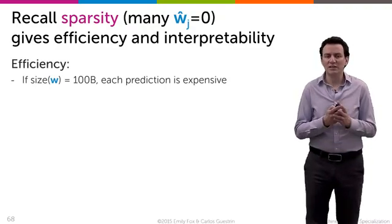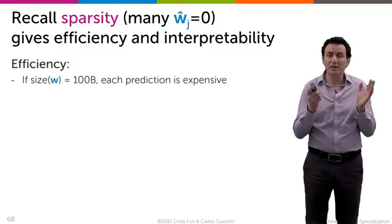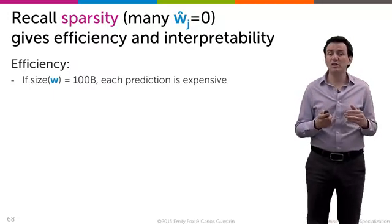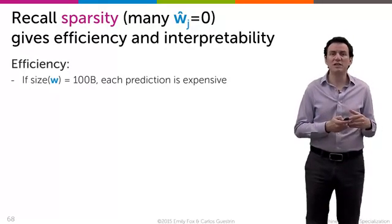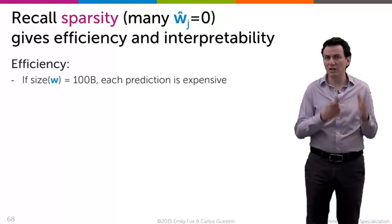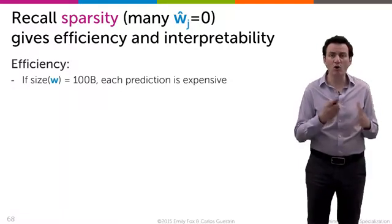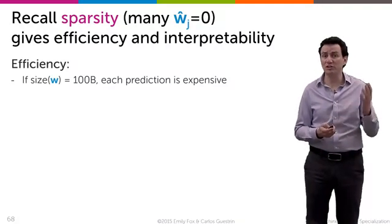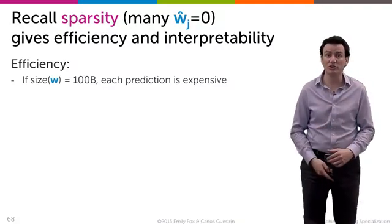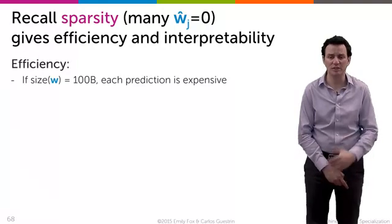For example, let's say that we have a lot of data and a lot of features, so the number of w's that you have can be a hundred billion. This can happen in practice in all sorts of settings. For example, many of the spam filters out there have hundreds of billions of parameters or coefficients that they learn from data.